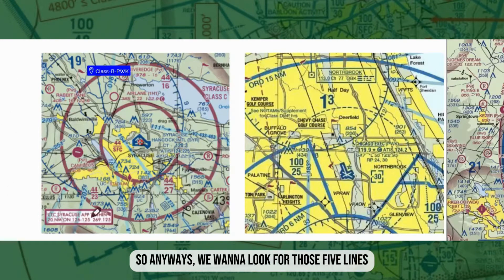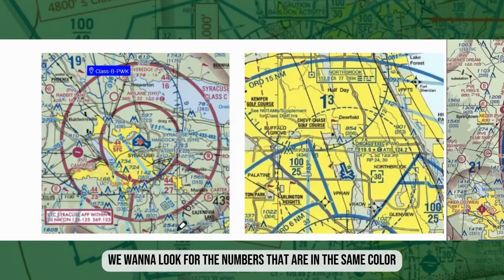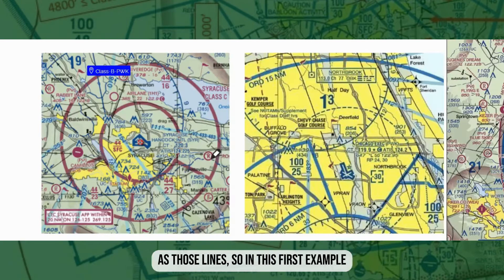We want to look for those five line types, and then for the ceilings and floors we want to look for the numbers that are in the same color as those lines.